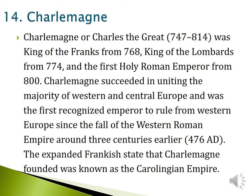Charlemagne was king of the Franks from 768, king of the Lombards from 774, and the first Holy Roman Emperor from 800. He established the Holy Roman Empire. Charlemagne succeeded in uniting the majority of Western and Central Europe and was the first recognized emperor to rule from Western Europe since the fall of the Western Roman Empire around 476 AD — about 300 years earlier. The expanded Frankish state that Charlemagne founded was known as the Carolingian Empire.